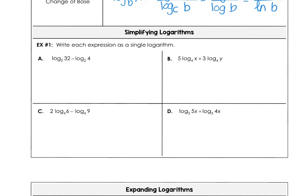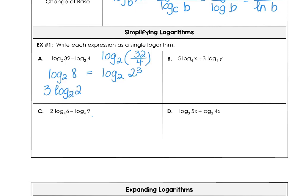First, we want to simplify logarithms and write the expression as a single logarithm. Since we have log base 2 of 32 minus log base 2 of 4, we can use the quotient rule: that would be log base 2 of 32 divided by 4, which is log base 2 of 8. We can rewrite 8 as 2 to the third power, bring the power 3 in front — so 3 times log base 2 of 2. And since log base 2 of 2 is 1, this simplifies all the way down to 3.